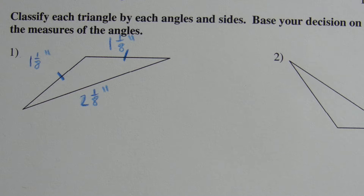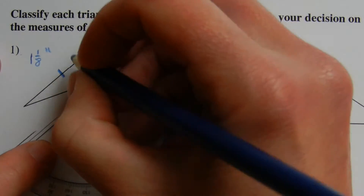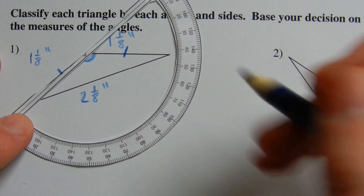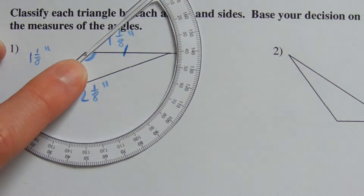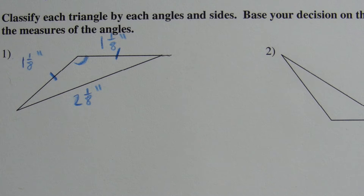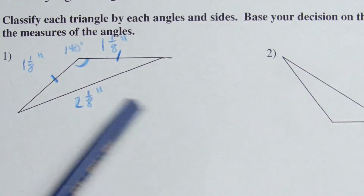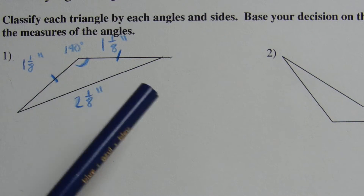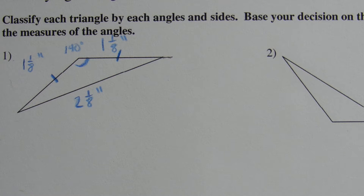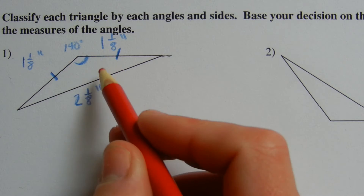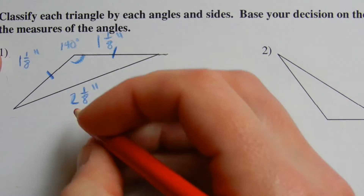An isosceles triangle has two sides of equal length. However, we have to decide: is this an obtuse isosceles, a right isosceles, or an acute isosceles? Looking at this angle, when we line our protractor up and extend the line out, we get that the angle measures approximately 140 degrees. Since 140 degrees is greater than 90 degrees, this is an obtuse angle. Therefore, this is an obtuse isosceles triangle.